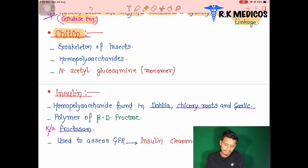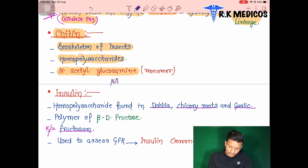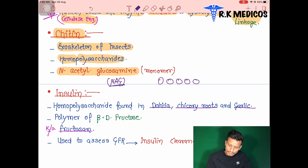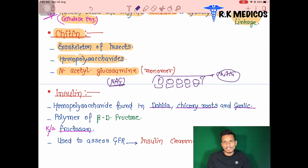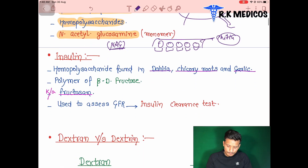Chitin is also a polysaccharide — it is a homopolysaccharide — and it forms the exoskeleton of insects. The repeating monomer unit in chitin is N-acetylglucosamine (NAG). These NAG units combine one by one to form the chitin structure that makes up the insect exoskeleton.